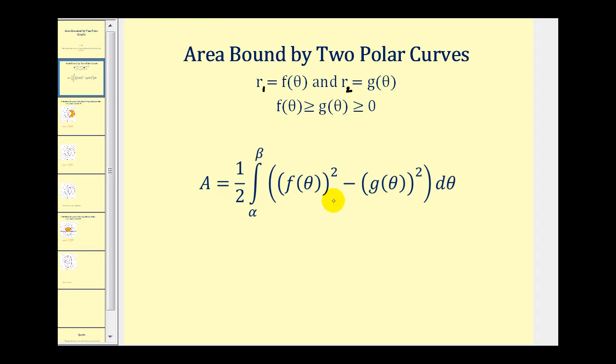If we want, we can also rewrite this in terms of r where we'd have r1 squared minus r2 squared d theta. These two are equivalent. Let's take a look at an example.